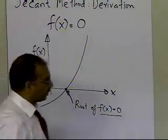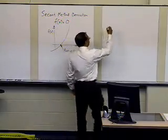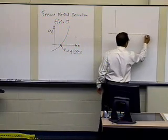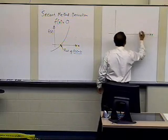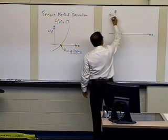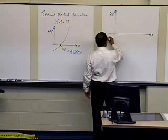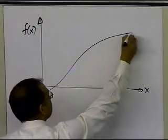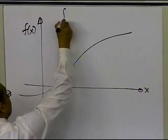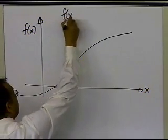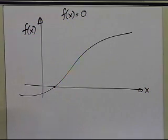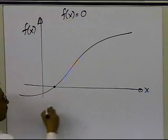Let me go ahead and draw this plot again so we can show what secant method is all about. So let's suppose somebody gives you a function like this and says, find the root of the equation f(x) = 0, and wants you to find out the root of this equation, which is right here.